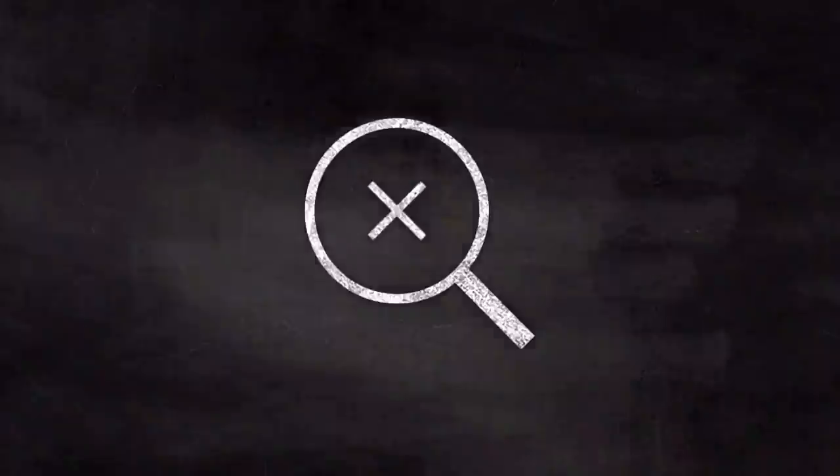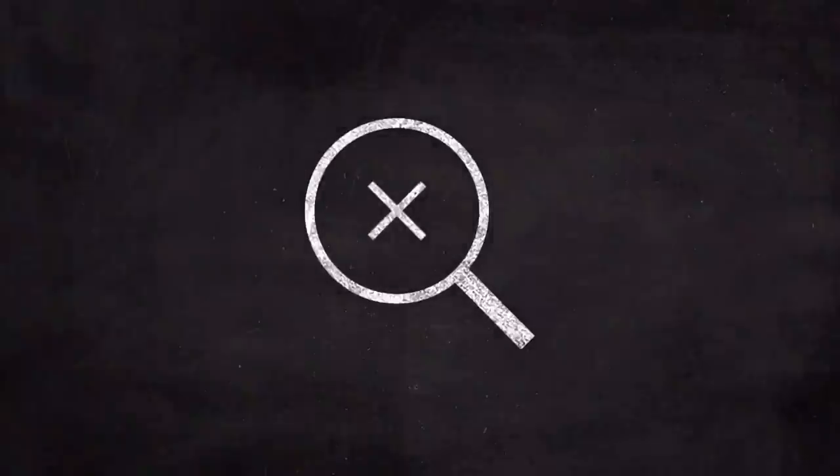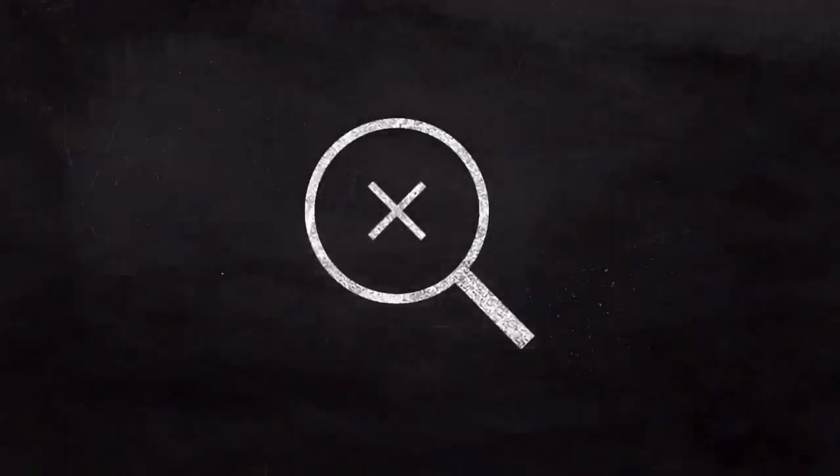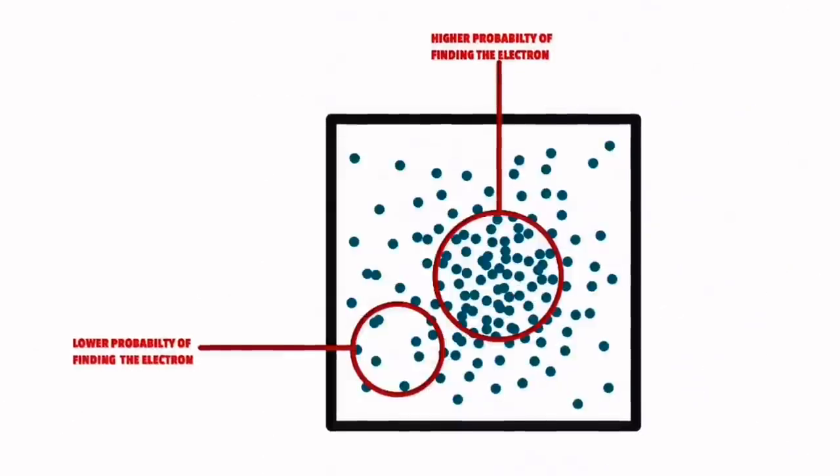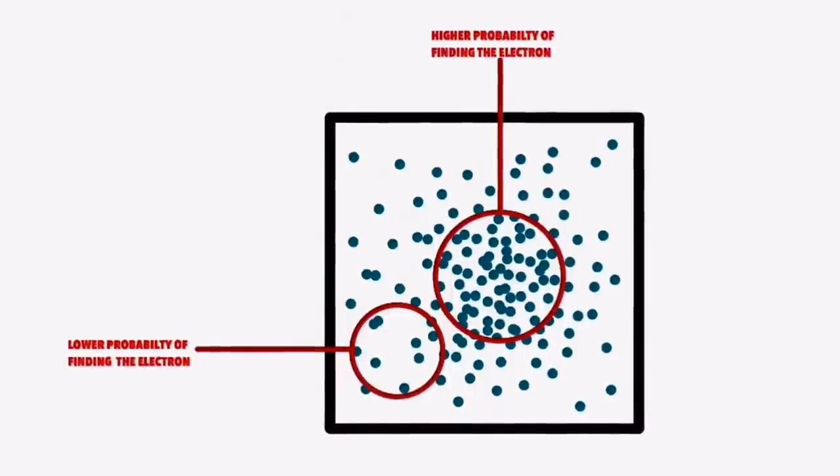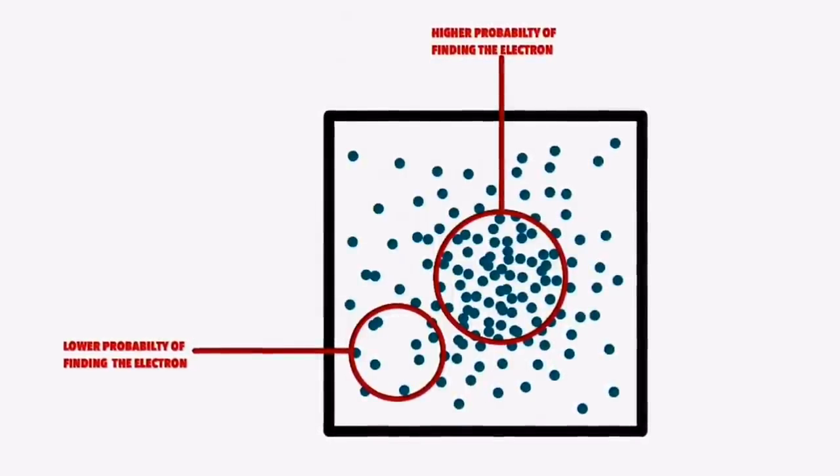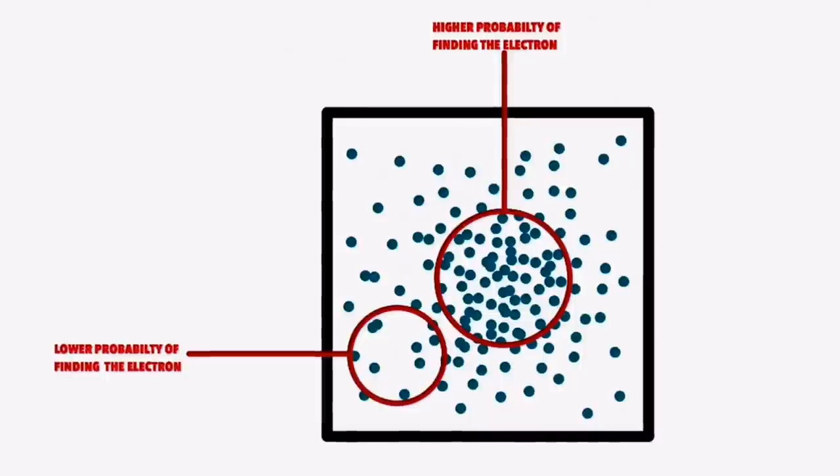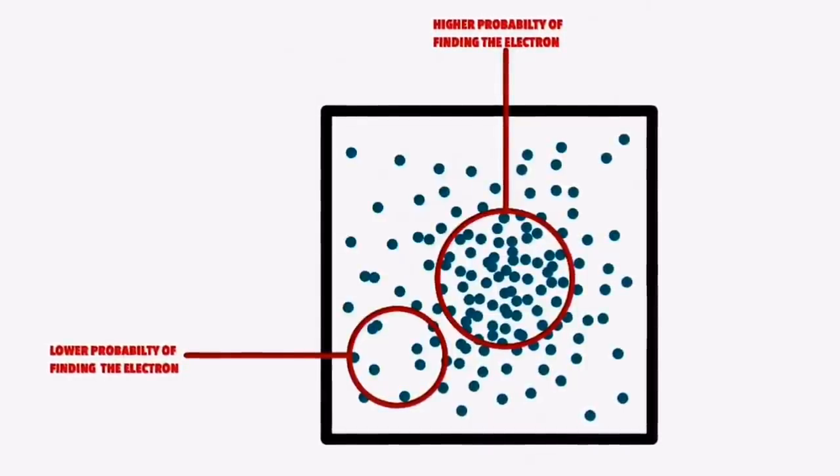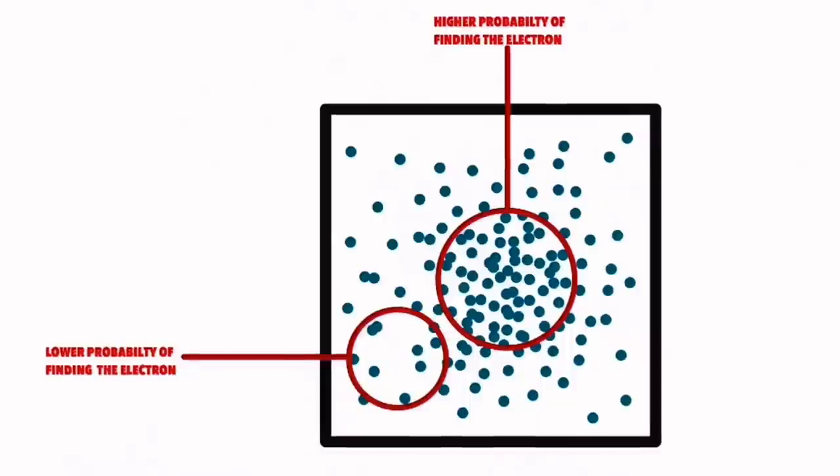Obviously, the results which you just heard are just exaggerated for the sake of this video because in real life you probably would not get results like that. Instead, you'd probably get results like this where the high concentration of dots indicate where the electron is most likely to be found inside the box and the low concentration of dots indicate where the electron is least likely to be found inside the box.